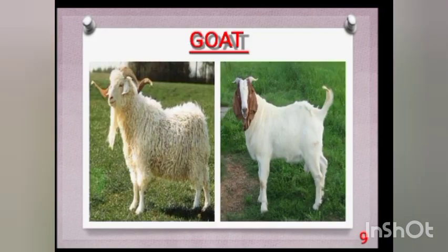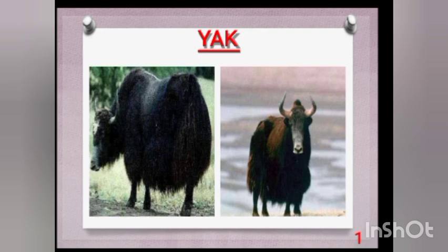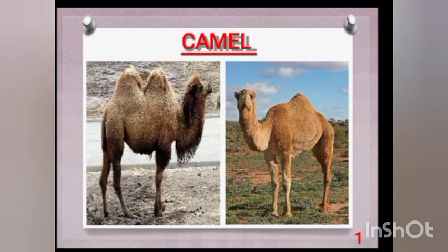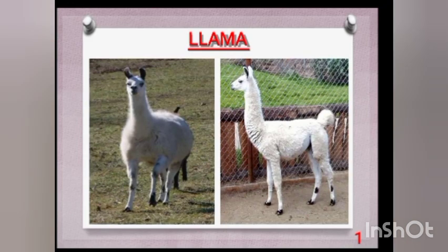Here you can see a Kashmiri goat, and we obtain wool from the goat as well, which is also known as Kashmiri or Pashmina wool. We also obtain wool from the hairs of the yak — this wool is brown in color. We also obtain wool from the hairs of camels and llamas.